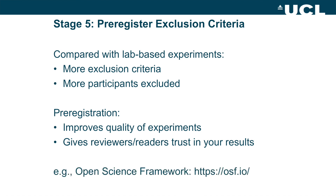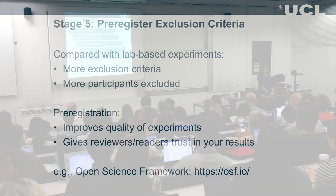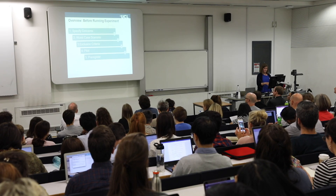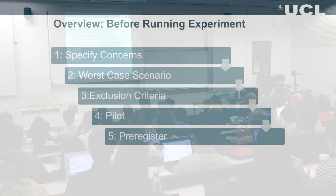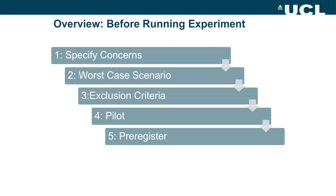We register on the Open Science Framework, though there are other ways to do it. So in summary: specify your concerns, think about the worst-case scenario, decide on sensible exclusion criteria, pilot to check they're sensible, then pre-register — and of course you then have the perfect experiment. And then the data arrives.